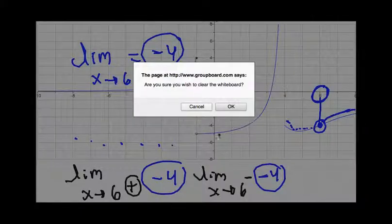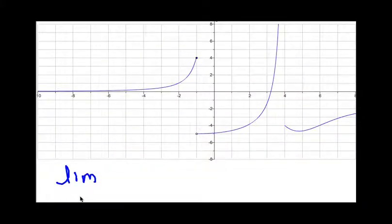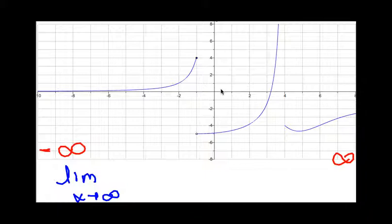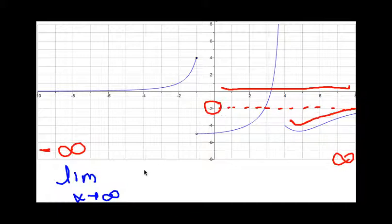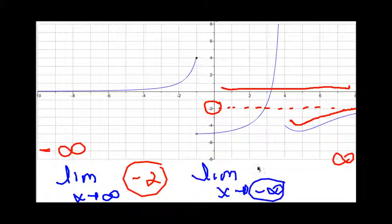Let's do one more: the limit when x approaches positive infinity. Infinity is going to be to the right, and negative infinity is to the left. If I'm approaching positive infinity, I go really close to that direction, and I see the function is approaching a y value of negative 2. What about the limit from negative infinity? I go all the way to the left, and I see that when approaching negative infinity, the y value is 0. And that's how easy it is to do limits with a graph.